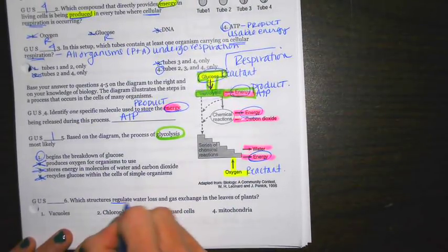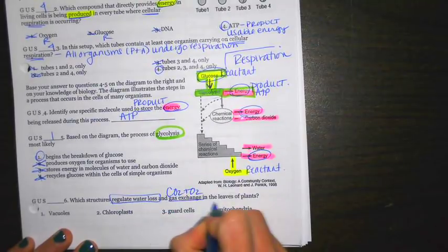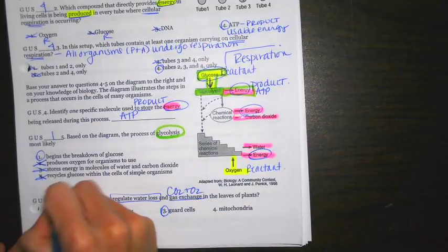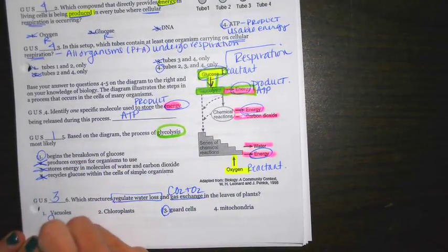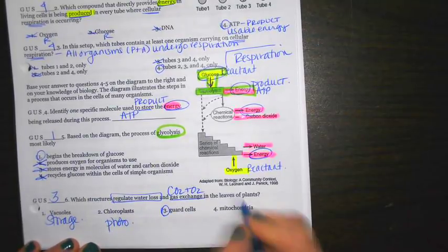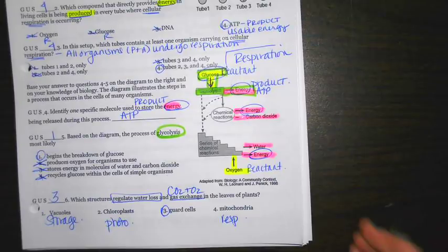Six says, which structures regulate water loss and gas exchange, so things like carbon dioxide and oxygen, in the leaves of plants? That's going to be three, a guard cell. Vacuole is for storage. Chloroplasts are going to be where photosynthesis takes place. And the mitochondria is going to be where respiration takes place.